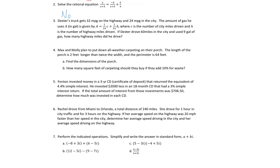Another way we can write no solution is the empty set. We put these little brackets and don't put anything inside. The brackets mean this is the list of all solutions, and we're not going to list any because there are none. So that is our final answer for that one.